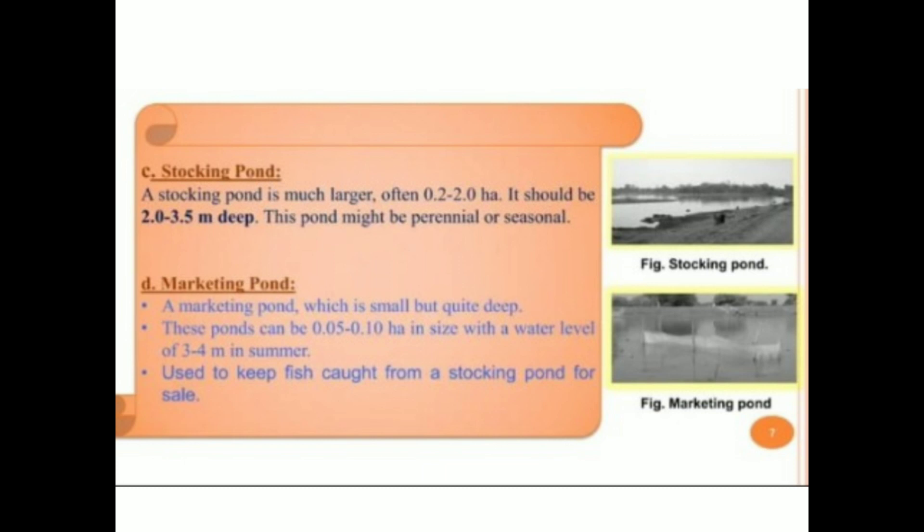Next is the stocking pond. A stocking pond is much larger, often 0.2 to 2 hectare, and should be 2 to 3.5 meters deep — about 1.5 meters deeper than the rearing pond. This pond might be perennial or seasonal, depending upon the season.